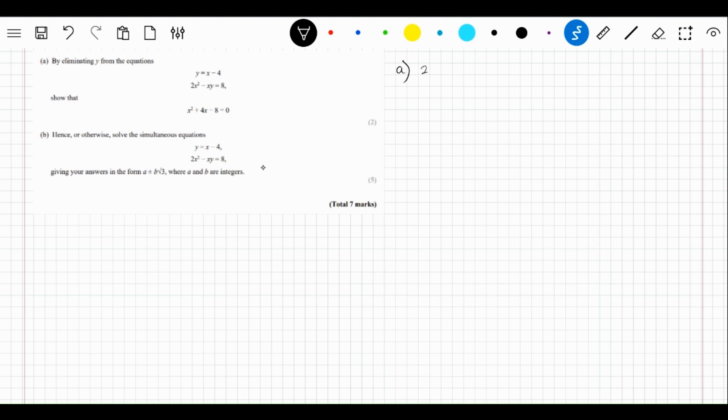So we do 2x squared minus x, and then this is where we put the x minus 4 from the y above. So that's going to be x minus 4 there, and that equals 8.